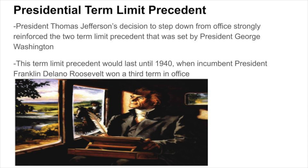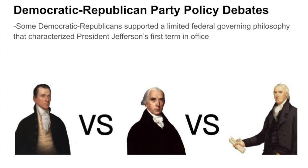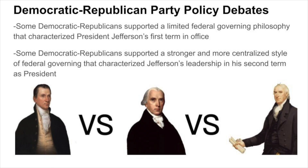Thomas Jefferson's absence in this election caused a major policy rift within the Democratic-Republican Party, with some Democratic-Republicans supporting a limited federal governing philosophy that characterized Jefferson's first term in office, while some began to support a stronger and more centralized style of federal governing that characterized Jefferson's leadership in his second term as president.